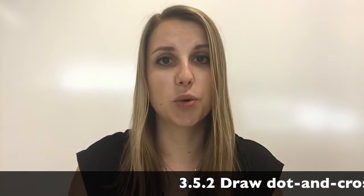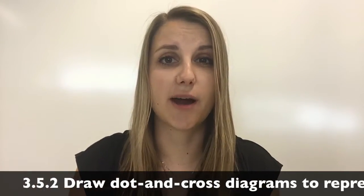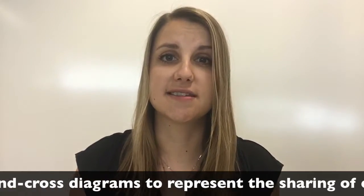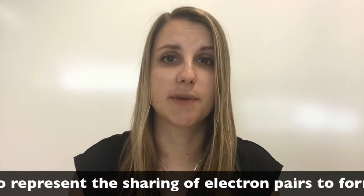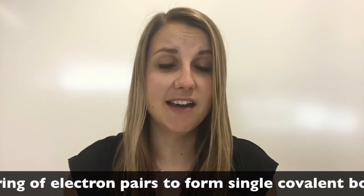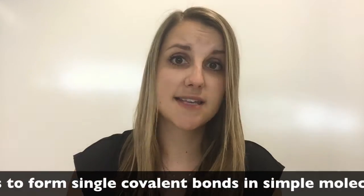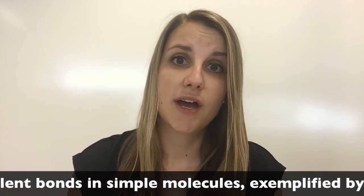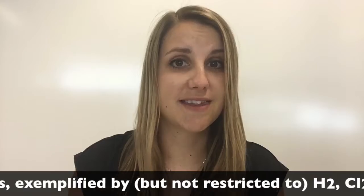Hey, so this syllabus point is all about how we draw dot and cross diagrams for covalent substances that just have single bonds in them. The examples that I'm going to use today are Cl2, chlorine gas, water H2O, and also CH4, which is methane.